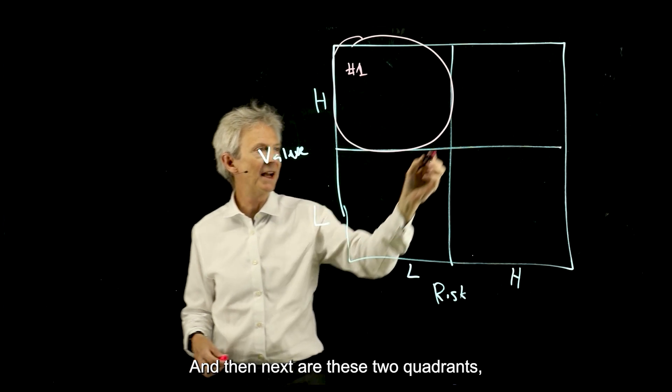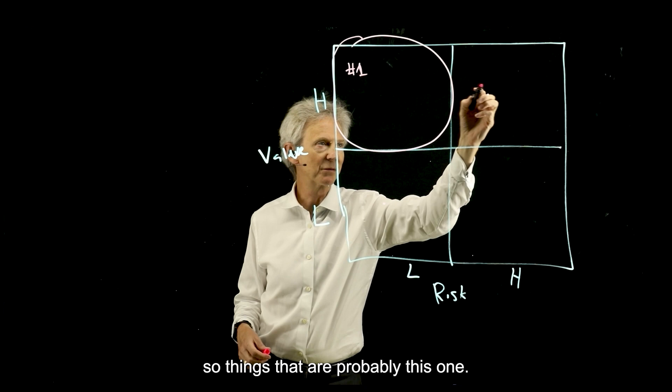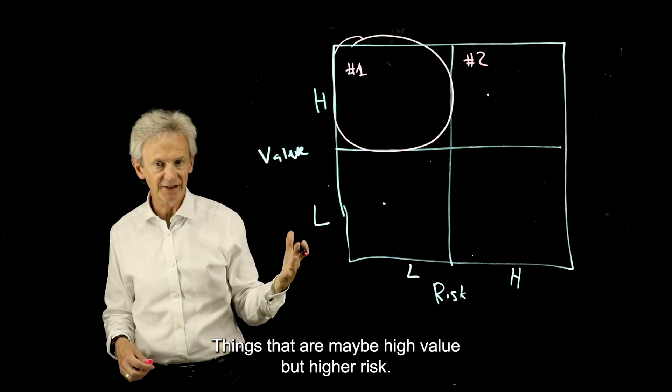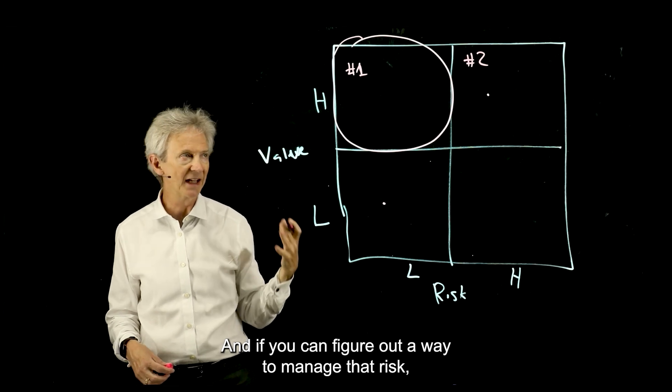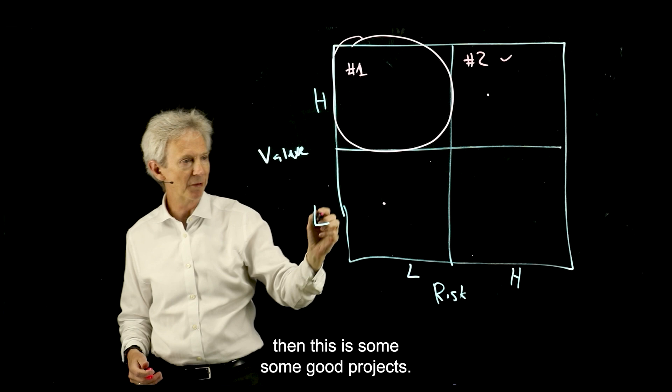And then next are these two quadrants. So things that are probably this one, things that are maybe high value but higher risk. And if you can figure out a way to manage that risk, then this is some good projects.